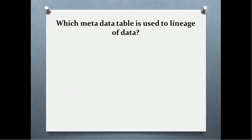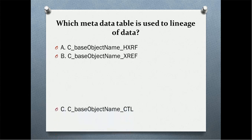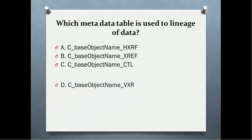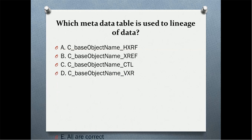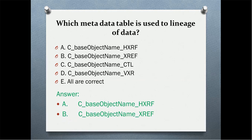Which metadata table is used for the lineage of data? Options include: HXRF — history XREF; XREF table; CTL — control table; VXR table. The correct options are history XREF and XREF, which maintain the lineage of data.